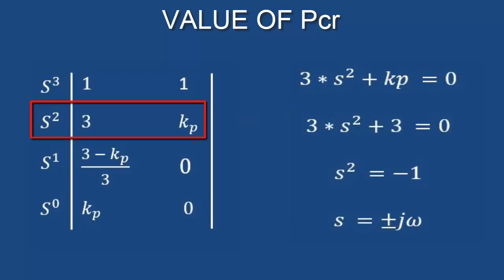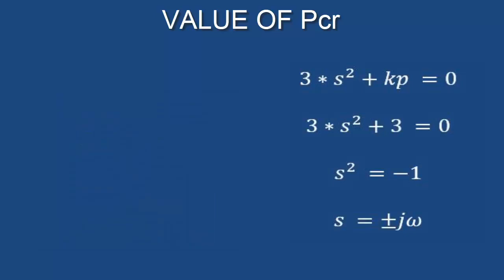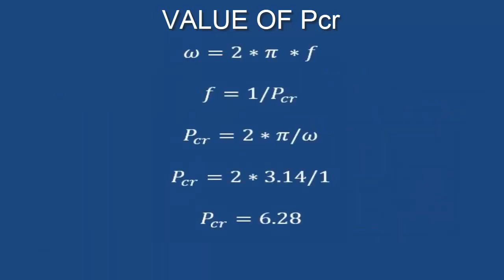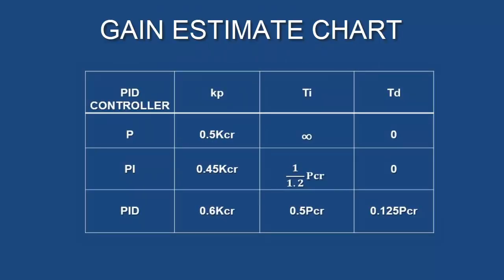From the auxiliary equation, we need to determine the value of s. In s domain, s is defined equal to j omega, so the value of omega equals 1. Value of omega is given by 2 pi f, where f is the frequency and it's the reciprocal of PCR - the period of oscillation. So PCR calculated becomes equal to 6.28.